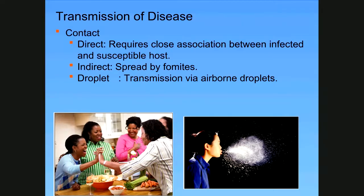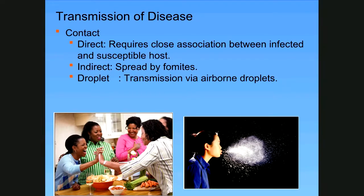In transmission, there are a couple of different ways it occurs. We have direct contact — a close association such as shaking hands, hugging, kissing, or direct body contact of any kind — between someone who is infected and a susceptible host. This is what we see with sexually transmitted diseases. Diseases transmitted by direct contact are a little harder to spread than diseases that are indirect or droplet.